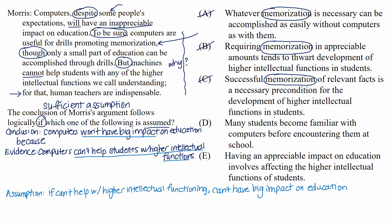D: Many students become familiar with computers before encountering them at school. This choice doesn't do anything for us in terms of guaranteeing that the conclusion will follow from its support. If many students are familiar with computers before encountering them at school, but computers can't help students with higher intellectual functions — which is what we're told — then maybe computers can have an impact on education, and maybe they can't. Familiarity with computers isn't relevant to this argument. We need to tie in higher intellectual functions.